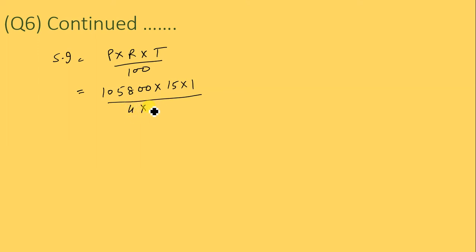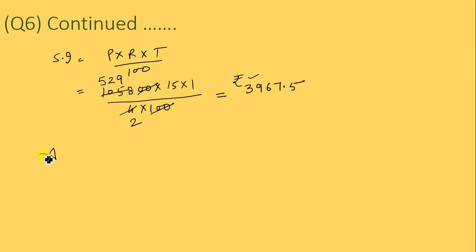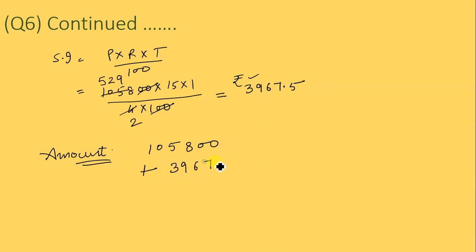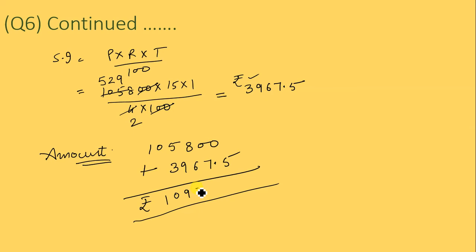Simple interest for the remaining 3 months: SI = 1,05,800 × 15 × (1/4) / 100. After cancellation this gives ₹3,967.50. Total amount = 1,05,800 + 3,967.50 = ₹1,09,767.50, that is one lakh nine thousand seven hundred sixty-seven rupees fifty paise. Further questions will be solved in the live session.